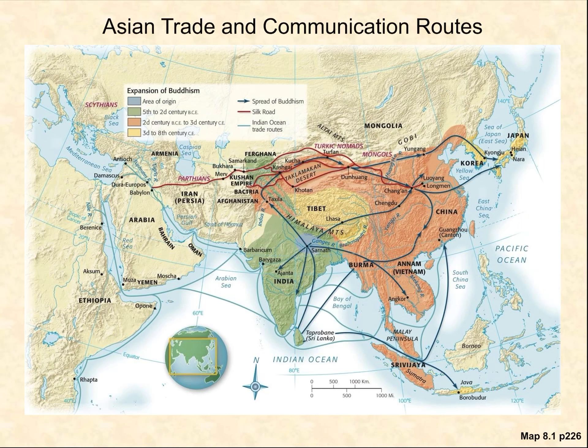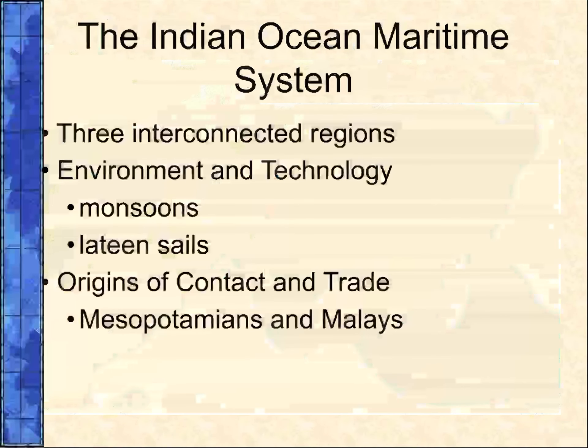These are the Asian trade routes we were talking about. You can see the Silk Road in red — that is one of the most common and widely known trade routes in world history.